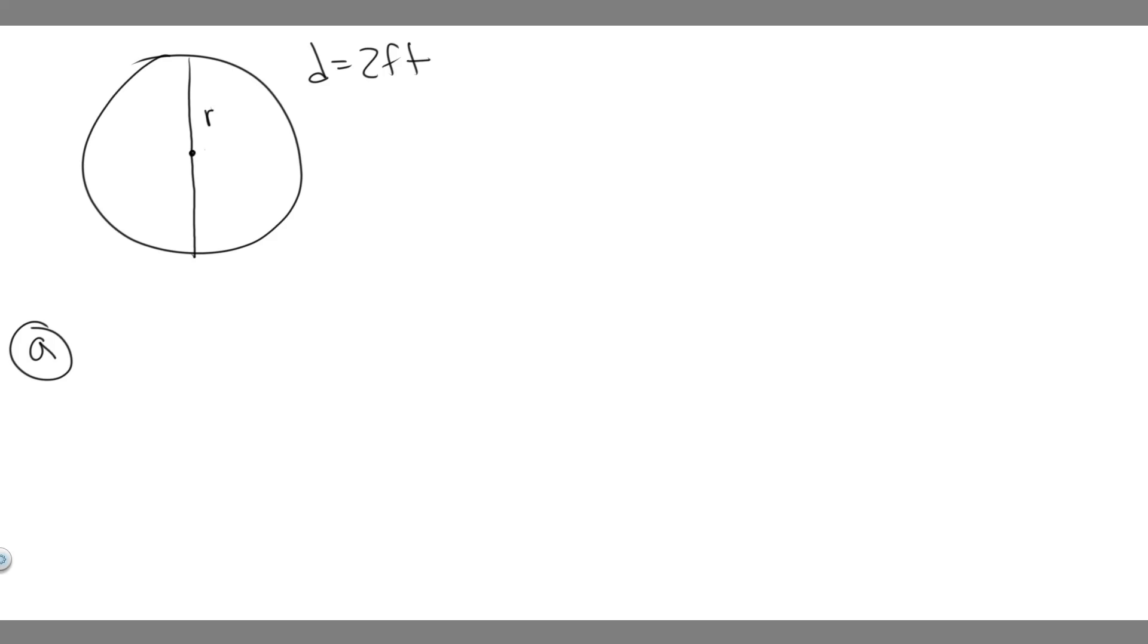So basically what we want to do is solve for the angle theta that's going to be turning in radians. You can calculate theta using the formula theta equals the length, the distance something travels, divided by the radius. So we need to find the length it travels and the radius.